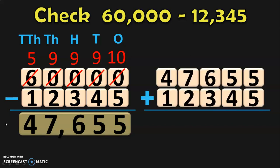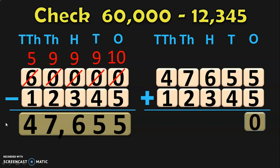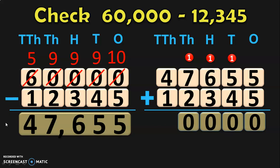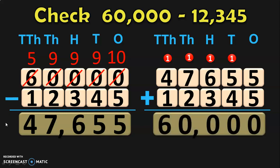Now let us do the checking part. Add the difference 47,655 plus the smaller number 12,345. Begin the addition from the ones place: 5 plus 5 is 10; write 0 and carry 1 to tens. In tens: 1 plus 5 is 6, 6 plus 4 is 10; write 0 and carry 1 to hundreds. In hundreds: 1 plus 6 is 7, 7 plus 3 is 10; write 0 and carry 1 to thousands. In thousands: 1 plus 4 is 5, 5 plus 1 is 6. In ten thousands: the answer is 60,000, which is the bigger number, confirming the subtraction is correct.